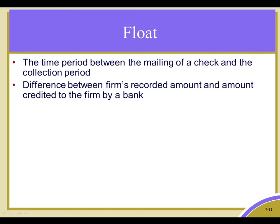There are two principal types of float. One is mail float, which occurs because it takes a while for a check to actually be delivered through the mail system. The second is called clearing float, which occurs because it takes a while for the check to make its way through the banking system.